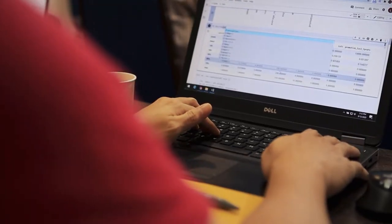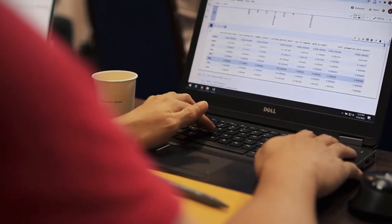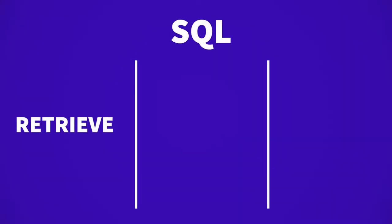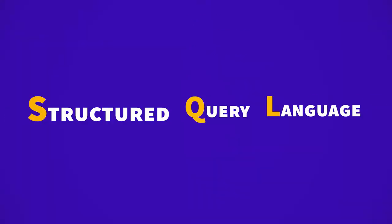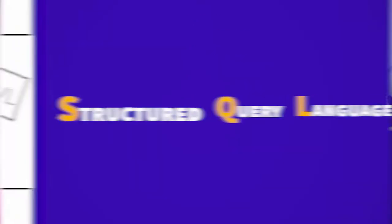SQL, Python, R, and Power BI are the tools that data scientists use in our daily tasks. We use them to retrieve data, process data, and also to present data. SQL is the short form for Structured Query Language, and is pronounced as 'sequel'. We use SQL to retrieve our data stored inside a server.